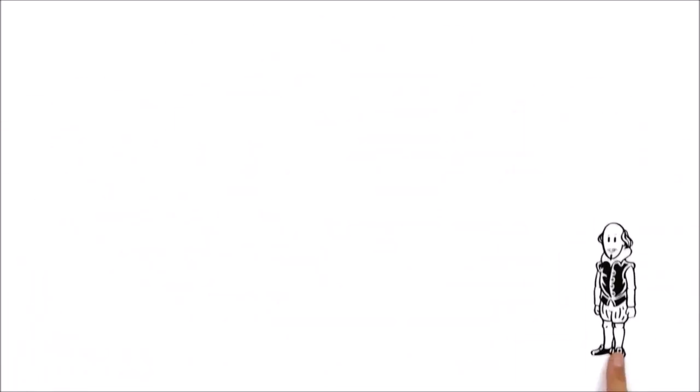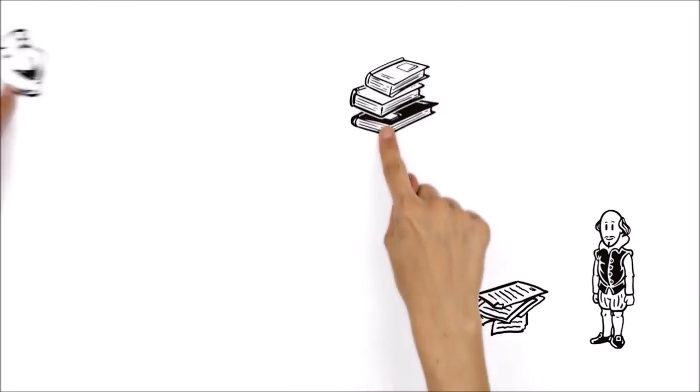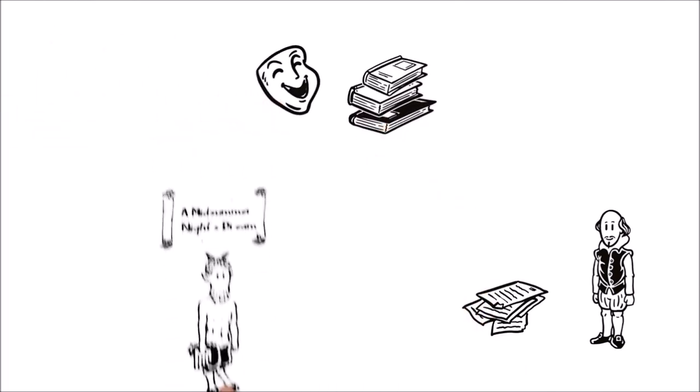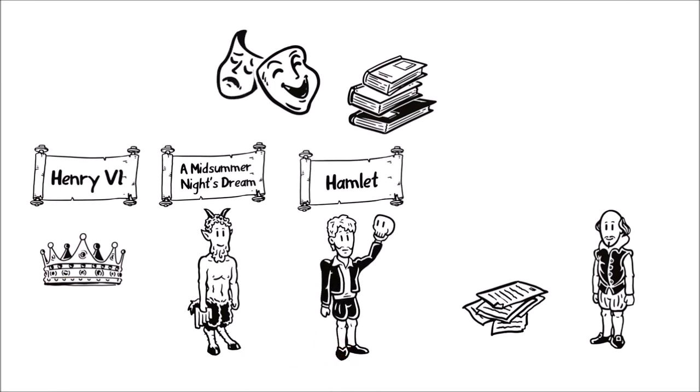Besides the plays, Shakespeare also wrote a multitude of sonnets and poems. At first his work consisted almost exclusively of histories and comedies like A Midsummer Night's Dream and Henry VI. Later, tragedies like Hamlet also became part of his portfolio.